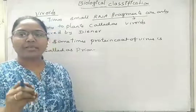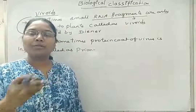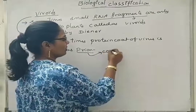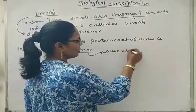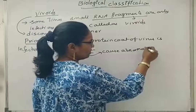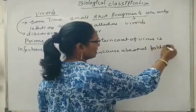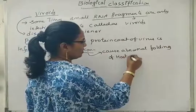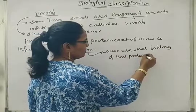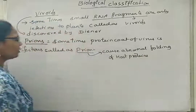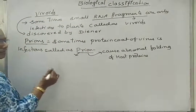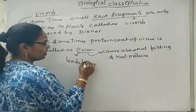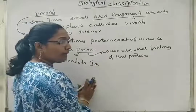Prions cause abnormal folding of the host proteins. It leads to Jacob's disease or mad cow disease.